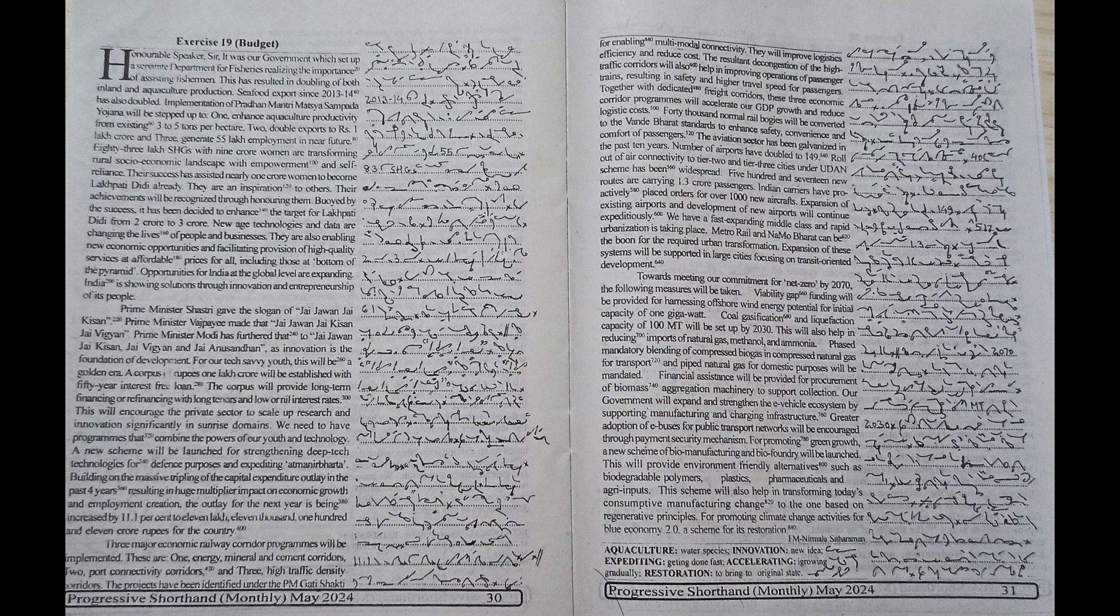Three major economic railway corridor programs will be implemented. These are: Energy, mineral and cement corridors; Port connectivity corridors; and High traffic density corridors.